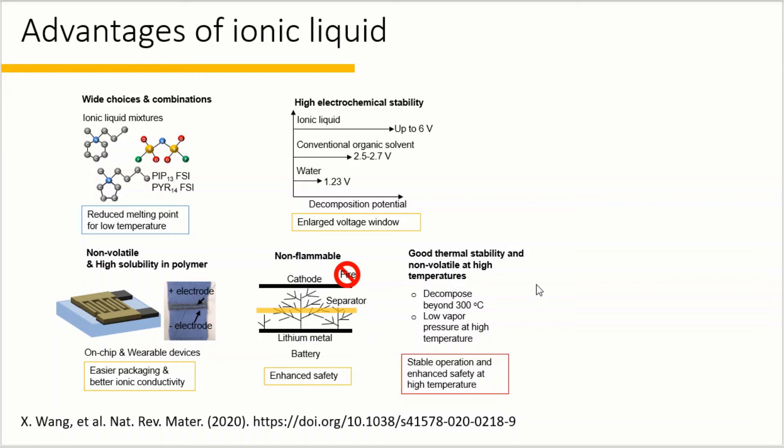Moreover, ionic liquids commonly possess excellent thermal stability and low vapor pressure at high temperature. This also allows stable and safe operation of energy storage devices at high temperatures.